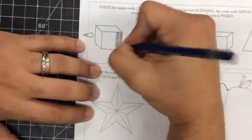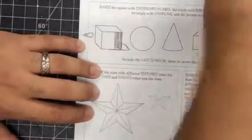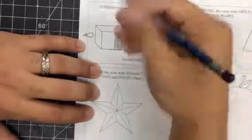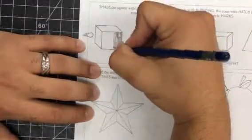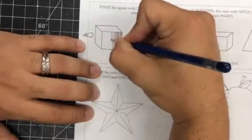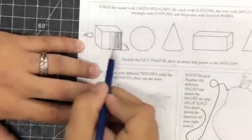Same thing. And then I'll switch to my 2B. Each time it's getting a little bit lighter because the pencil already gets lighter but I'm also starting to incorporate more space.